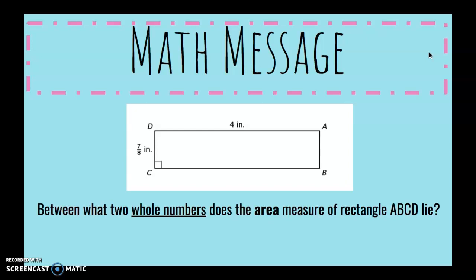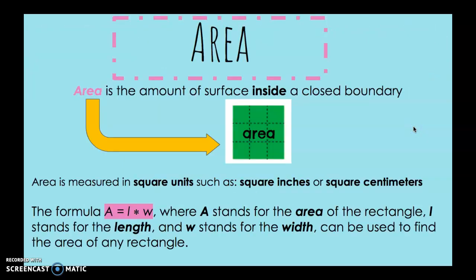Between what two whole numbers does the area measure of rectangle ABCD lie? Area is the amount of surface inside a closed boundary. Area is measured in square units such as square inches or square centimeters.